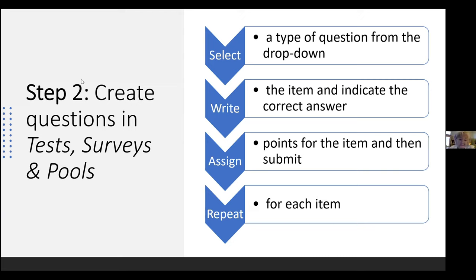The second step is kind of the heart of creating the test — this is where you put the questions in. The first thing you do is from a dropdown menu, select the type of question you want. It opens up a blank version of that question and you get to write the item, indicate what the correct answer is, and before you leave that area, assign points to each item. If you forget, you can go back and do it later, but it's easier to plan your test in advance. Then you just repeat that for each item.